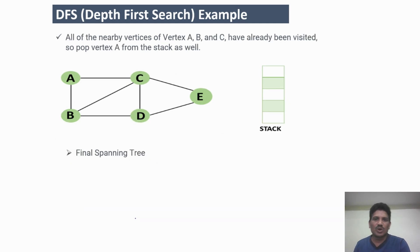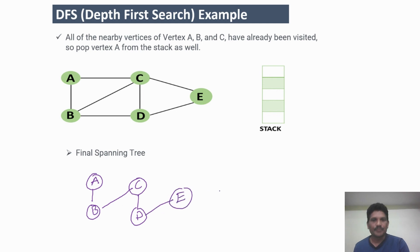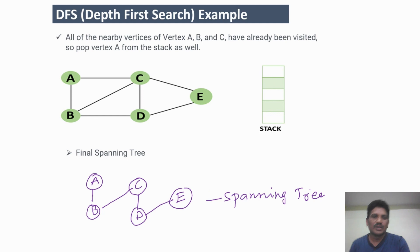Once all vertices are popped from the stack, the spanning tree is produced. A has been visited first, then B, then C, then D, and finally E. This is the spanning tree — each and every node has been visited in the graph using DFS.